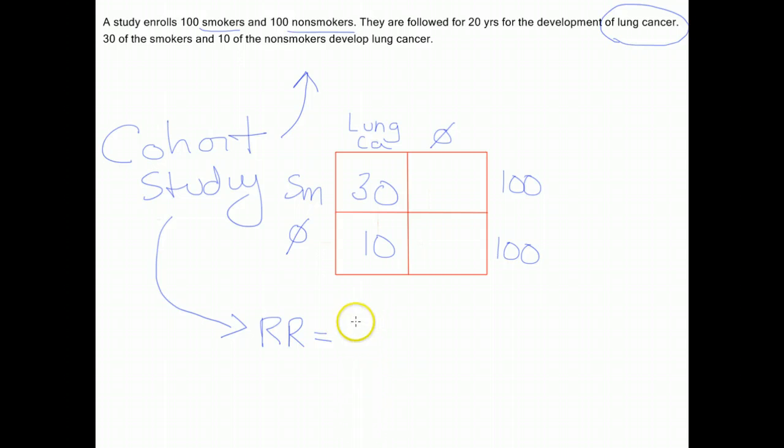Now, a relative risk is only a ratio of the risk or probability of developing disease in the exposed group, or amongst the smokers, divided by the risk of developing disease in the nonsmokers. The risk of developing disease as a smoker is just the number of people that developed lung cancer, which is 30, out of everybody that smoked, which is 100, and that's equal to 30%.